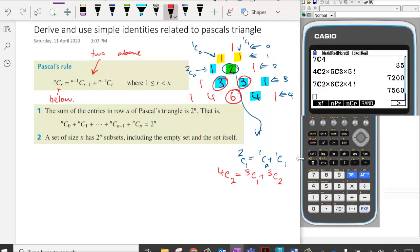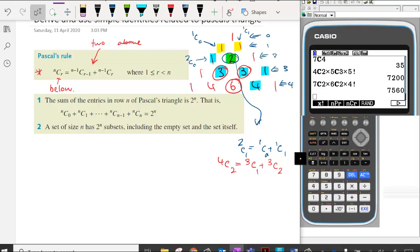So that statement is something that we use all the time in Pascal's. Now the other one is something we've talked about previously. We're saying that the sum of all the terms in a row of Pascal's will be equal to 2 to the power of the row number. Or the sum of all the possible combinations for a given n value will be 2 to the power of n.